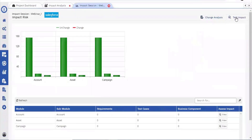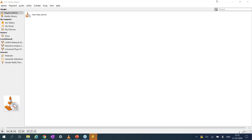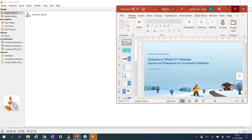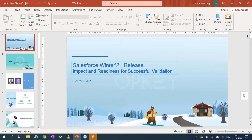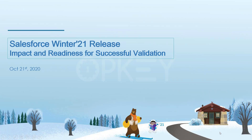With respect to test case impact, OpKey also highlights which test cases are impacted based on changes in test scripts. This helps users do risk-based testing — all test scripts impacted because of changes in the object trigger or layouts will automatically show up, and users can create a job with all these test scripts and run it on the Salesforce org.